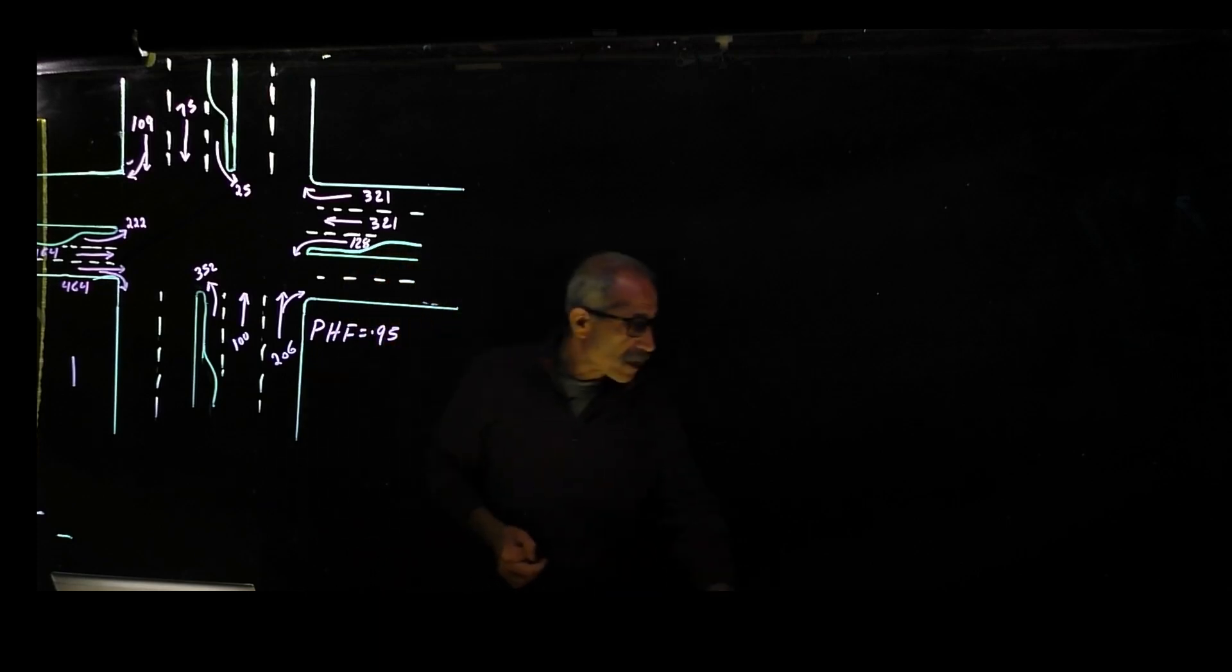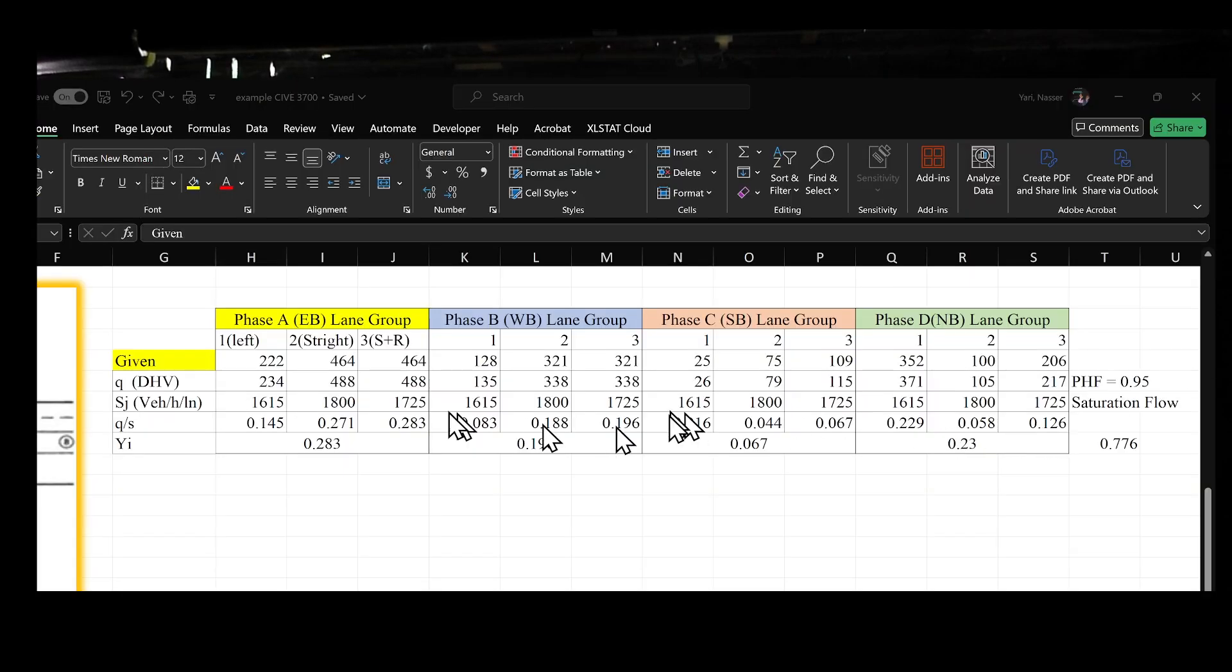Take a look at the Excel sheet. We take those data which is given right here, and we have all four phases: eastbound, westbound, southbound, and northbound. This data is given to us and the peak hour design factor is given 0.95, so we're going to convert it to an equal hourly flow by dividing by 0.95 and we get a higher number.